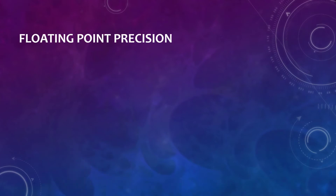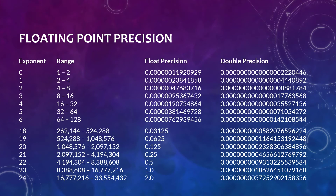For the technically minded, a float has 23 bits of mantissa, and 2 to the 23 is about 8 and a half million. For the less technically minded, by the time you get to that number, our precision will have been reduced all the way down to integers only.